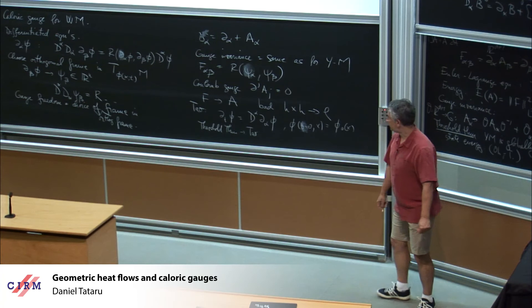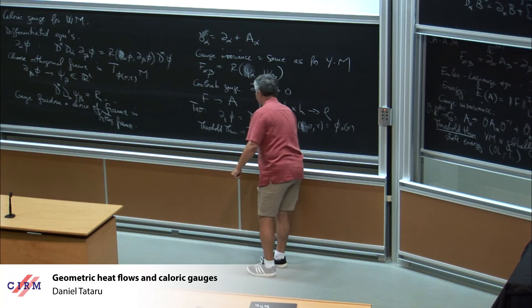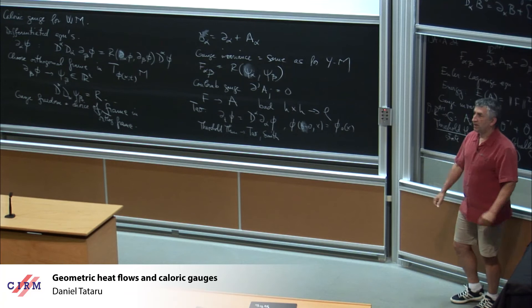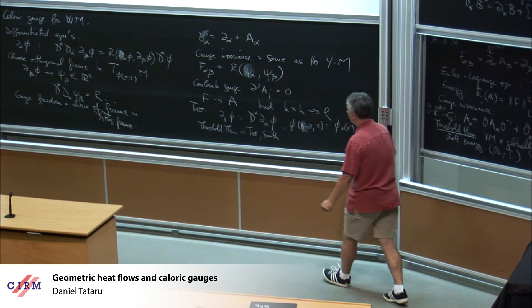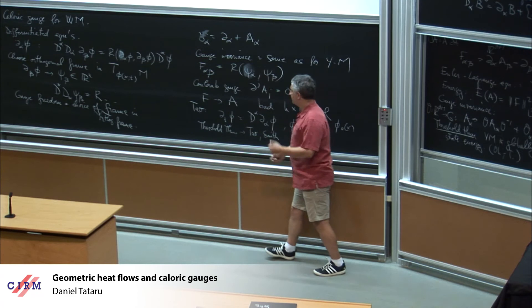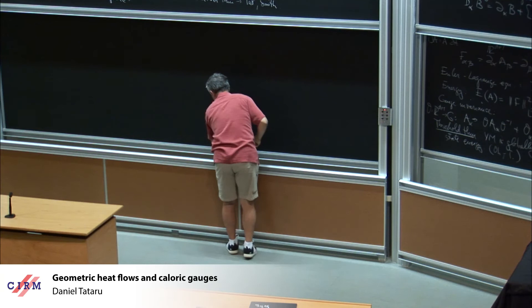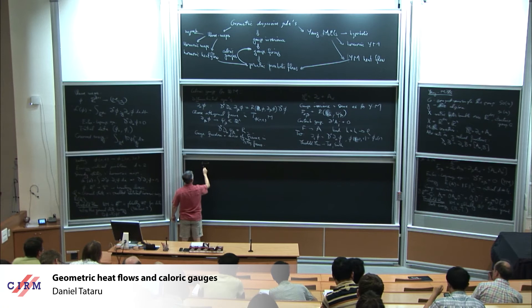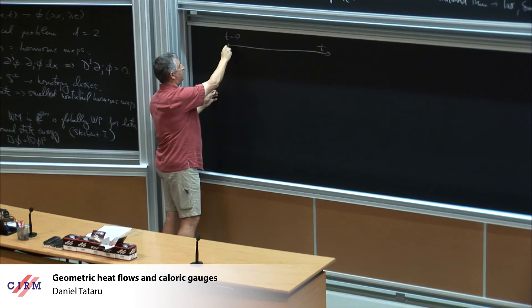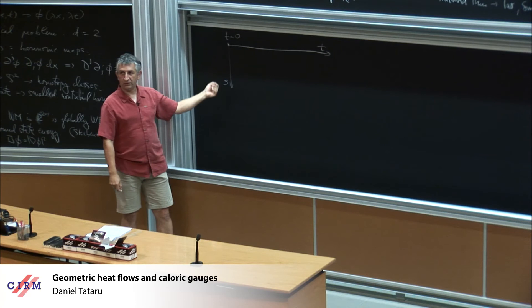There is a version of the threshold conjecture that's true for this equation — a threshold theorem which says that below the ground state energy, you can solve this equation globally in time. This is a theorem of Tao when you look at targets which are the hyperbolic space, and then work of Smith when you look at compact targets. But that's not all you need to do — now you want to use this parabolic problem to find a way to provide a good assignment for A at the initial time. The picture is like this: you start with t = 0, you have some initial data, and you want to solve the hyperbolic equation.